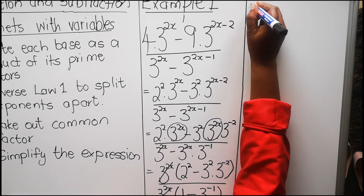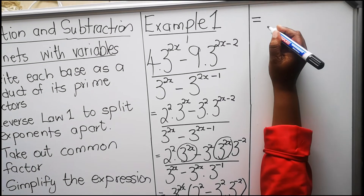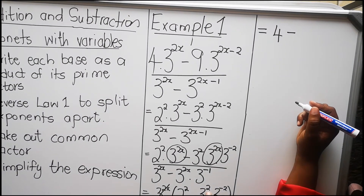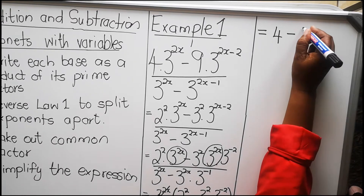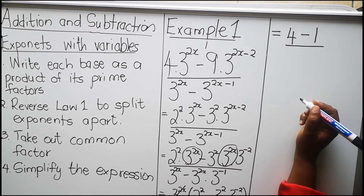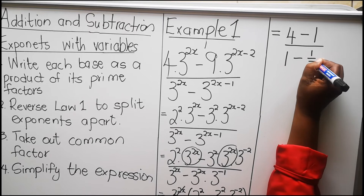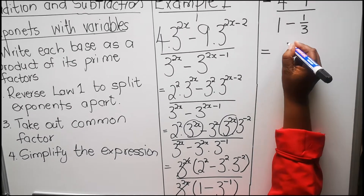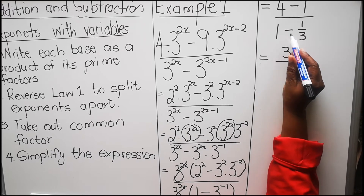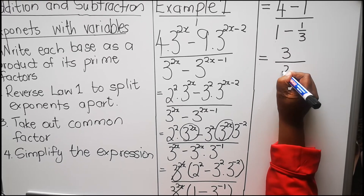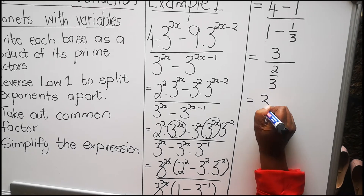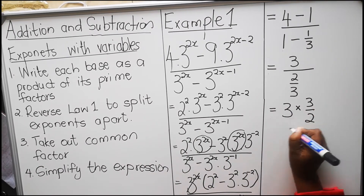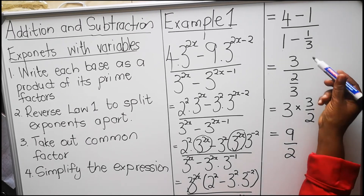Let's go to this side of the board. With the numerator, we will be left with 2 to the power 2, which is 4, minus 3 to the power 2 and 3 to the power minus 2, which will give us 3 to the power 0, which is 1. Divided by — with the denominator — we have 1 minus a third, because we have 3 to the power minus 1. So 1 is 3 over 3, minus a third, we get 2 over 3. So we will get 3 multiplied by — divide, change to multiply, swap the fraction around — 3 over 2. Then we will get 9 over 2.